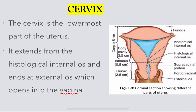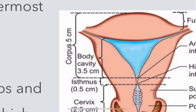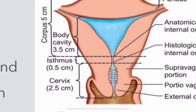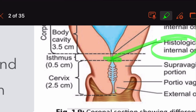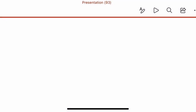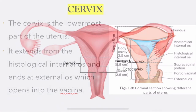Before understanding cervicitis, let us look into the anatomy of the cervix. The cervix is the lowermost part of the uterus. You can see the uterus divided into three parts: the body, isthmus, and the cervix. This cervix is situated between the histological internal os and the external os. The external os continues as the vagina.